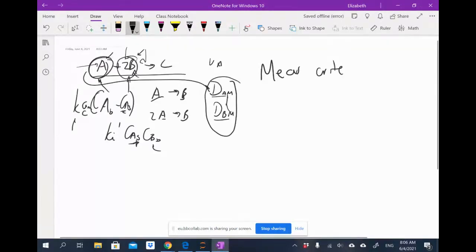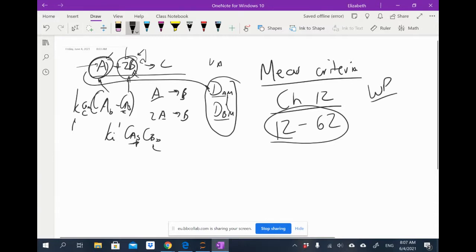the Mears Criteria, only in Chapter 12. So I will revisit this again if people miss this lecture. The Mears Criteria is given as a very hidden equation, as equation 12-62.